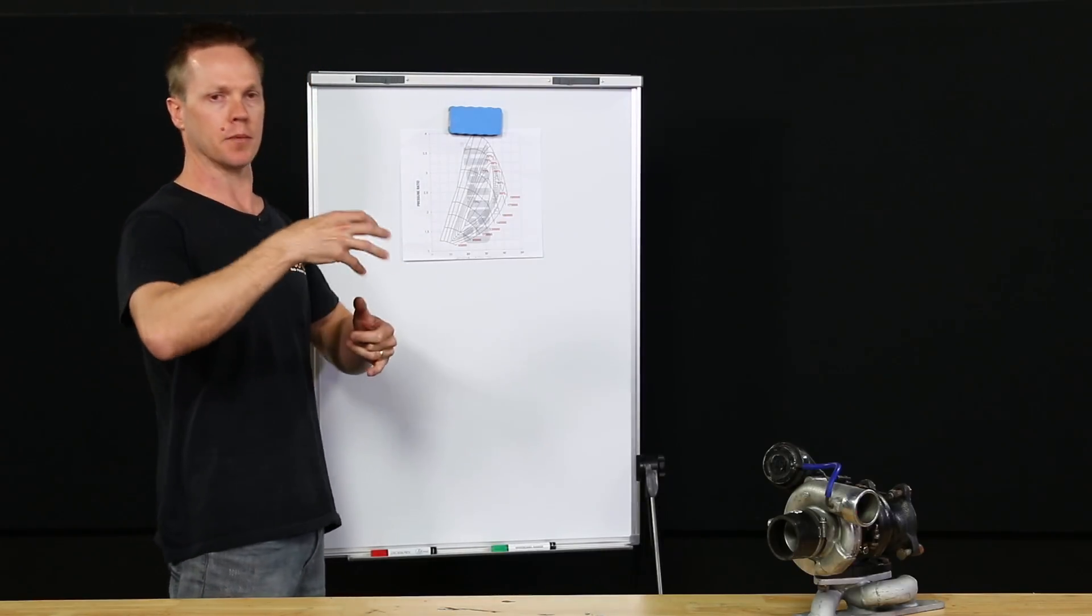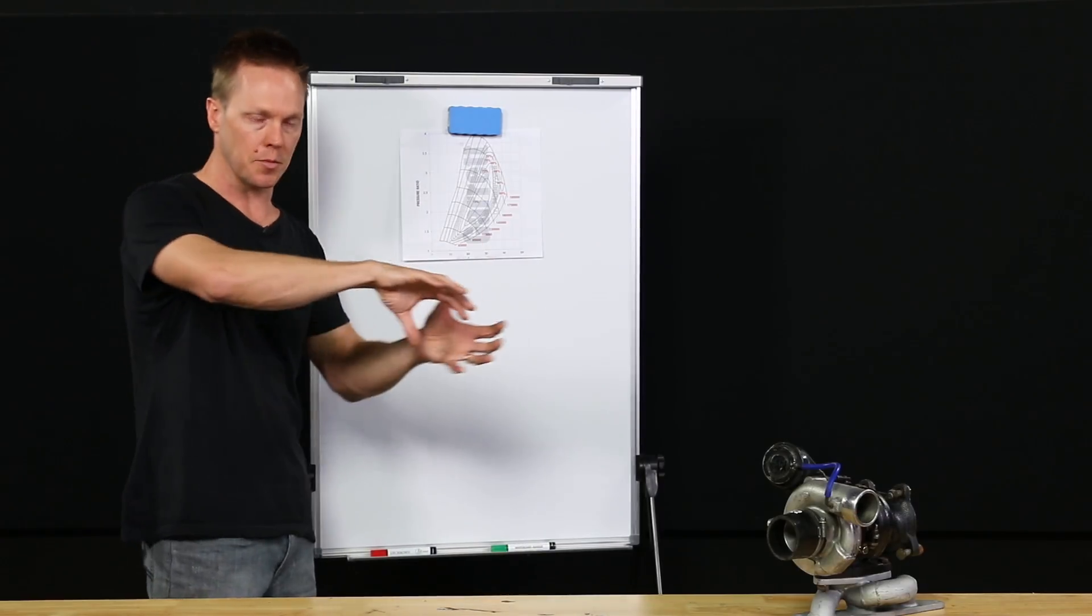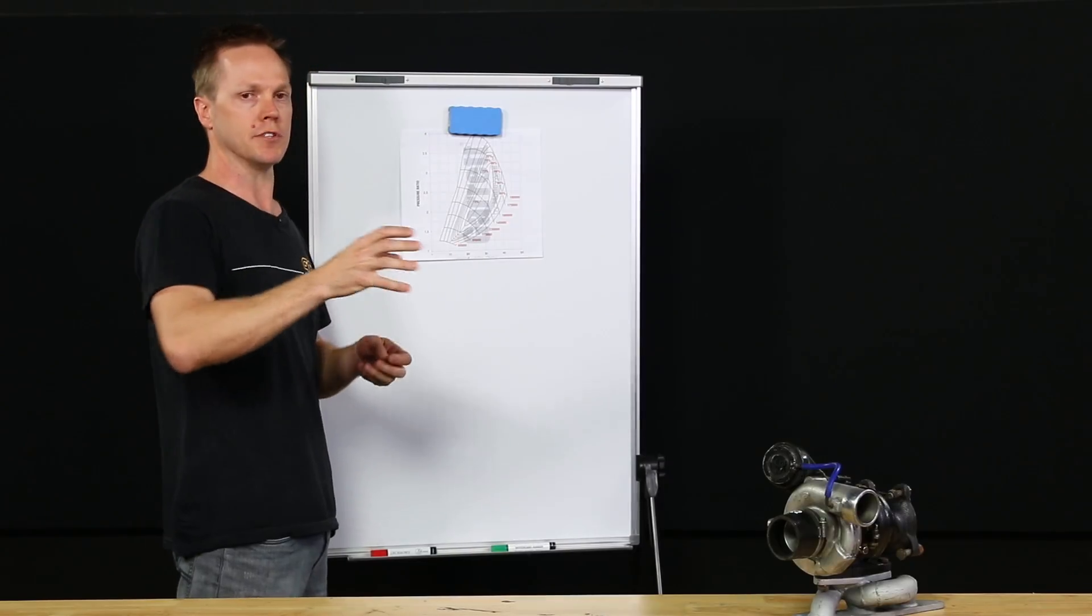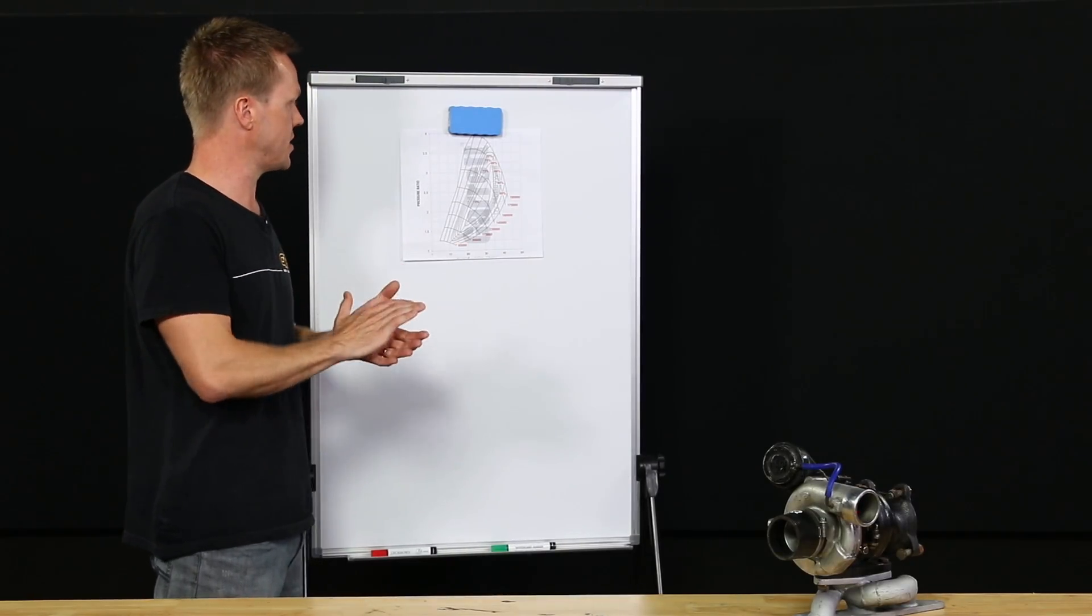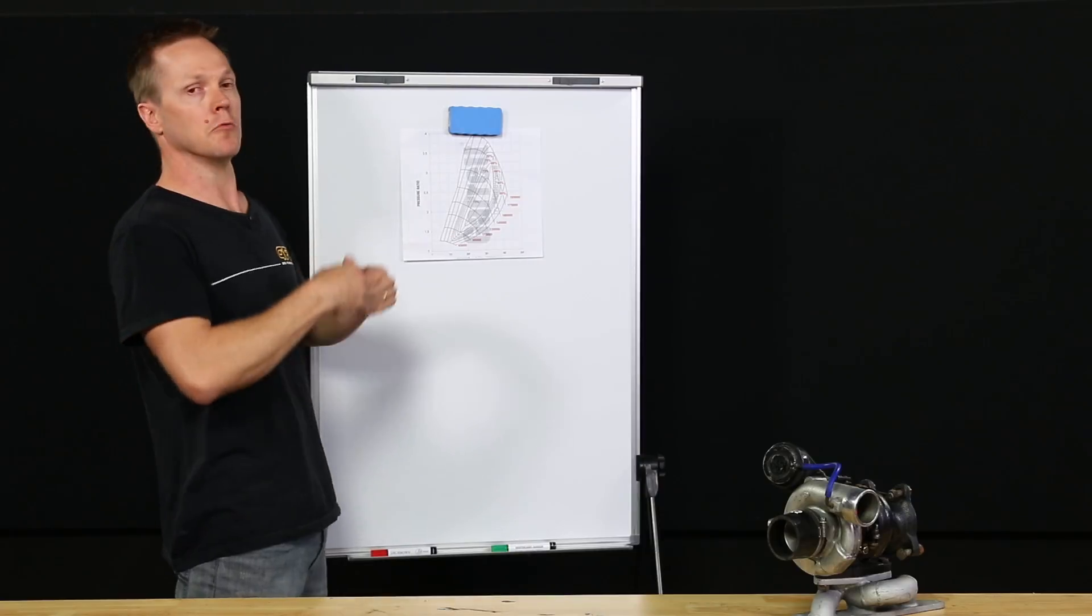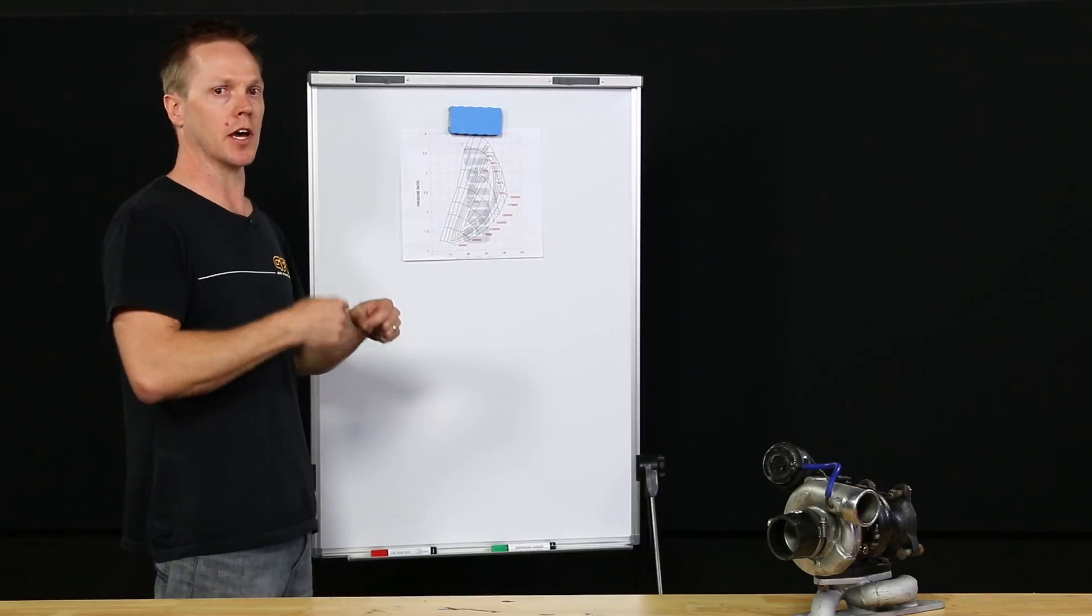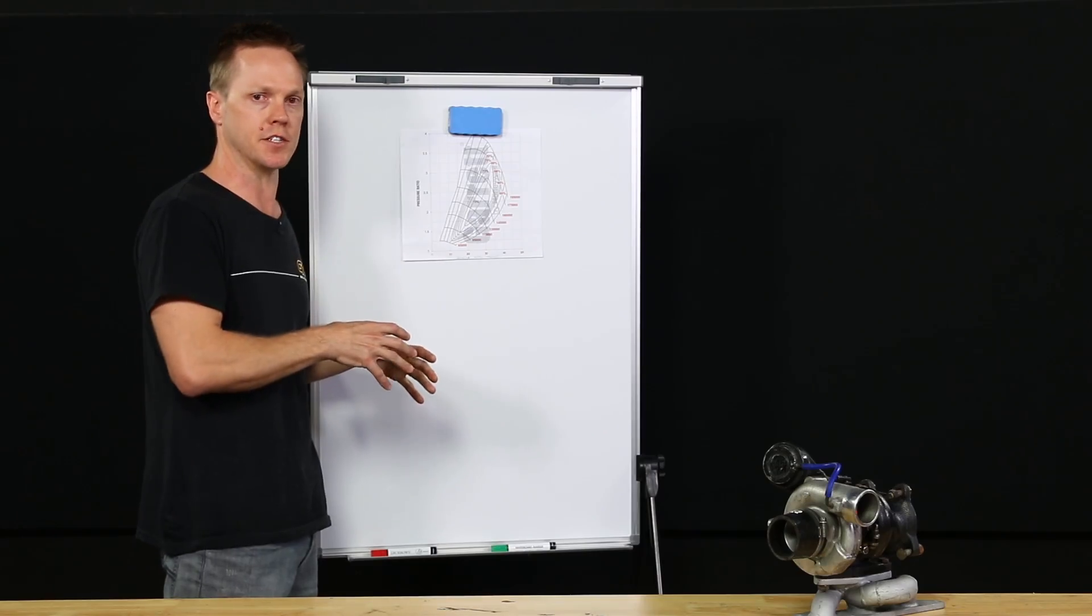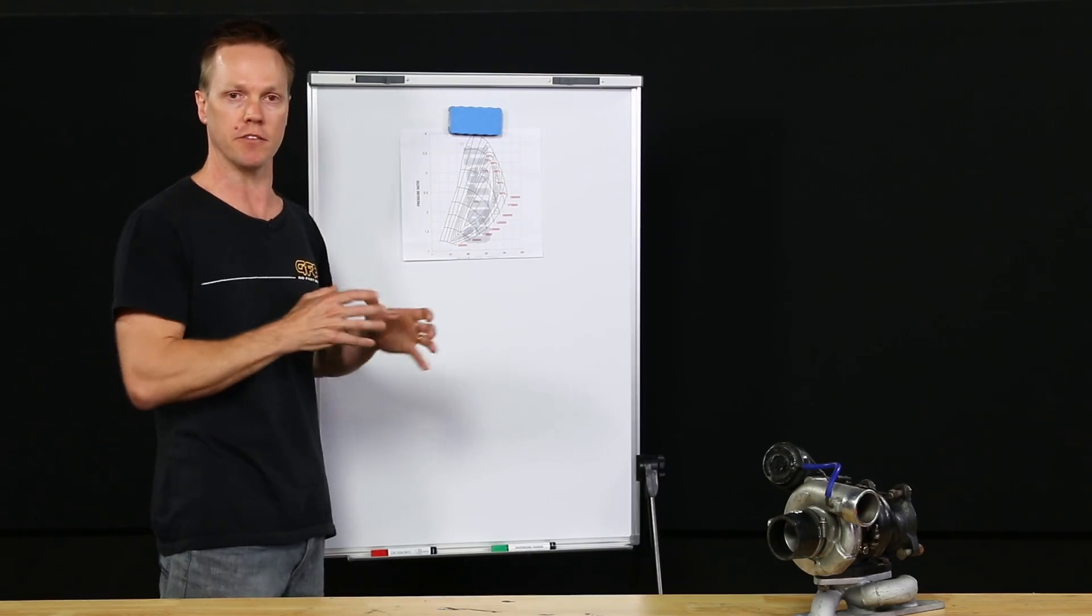This efficiency is how much more it heats up than what it should be if it was ideal. So basically you're getting heat from the compressor, heat from the turbine flows through to the compressor. So no compressor is 100% efficient. So when you compress the air, even though it will naturally rise in temperature, it will go even more because of the efficiency of the turbo. So the lower the efficiency, the hotter it makes the air for a given boost pressure.